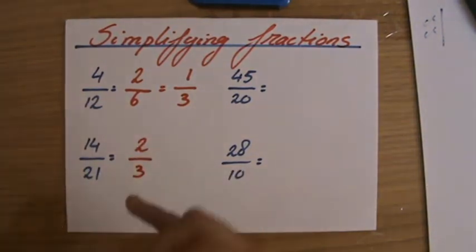2 over 3. Do 2 and 3 have a common factor? No they don't, except 1 of course. But they're both prime numbers, so 2 over 3 is the simplest form.